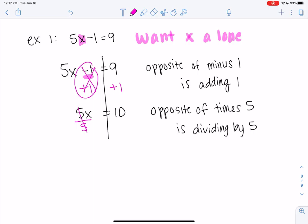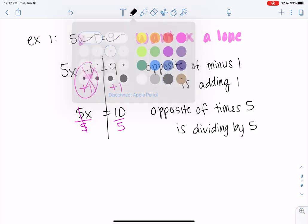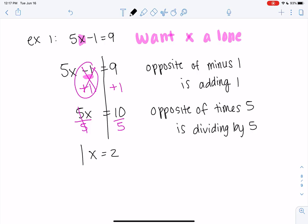Alright, 5 over 5 is 1. Whatever we do to one side, we do to both sides. So I divide both sides by 5. And I'm left with x equals 2.